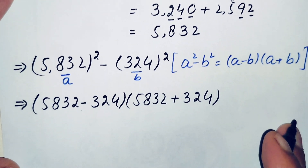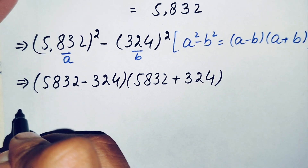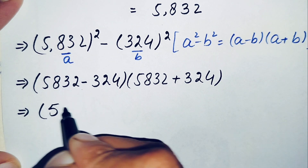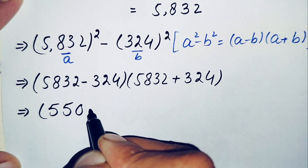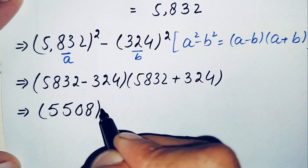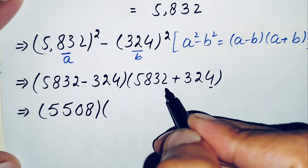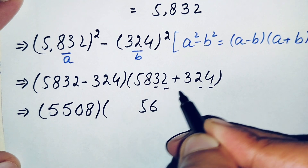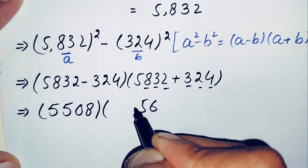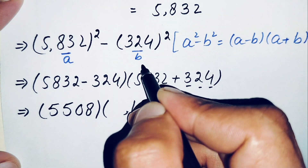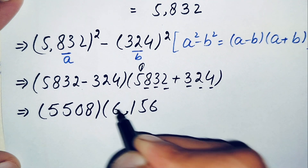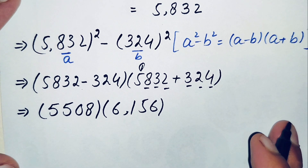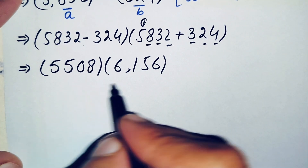Now we subtract and add these two numbers. 5832 minus 324 gives 5508. For the addition: 4+2=6, 2+3=5, 8+3 gives 11 so carry 1, 5+1=6. So 5832 plus 324 equals 6156. The expression is now 5508 times 6156.